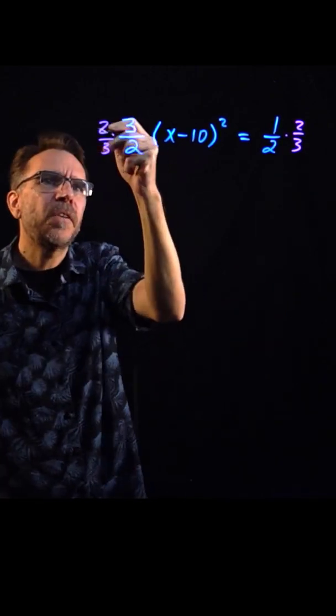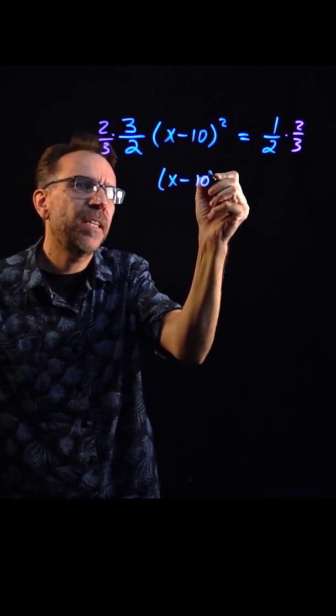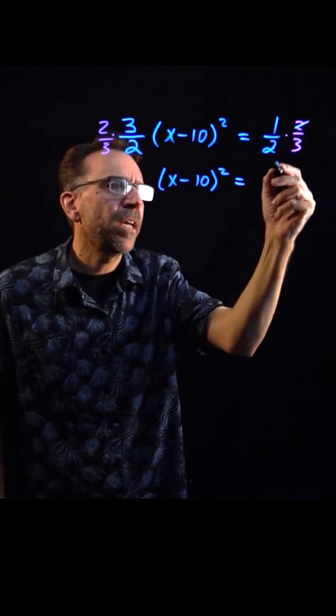Okay, so when I do that, this fraction is really just one. And I'm left with x minus 10 squared equals, two's cancel, one third.